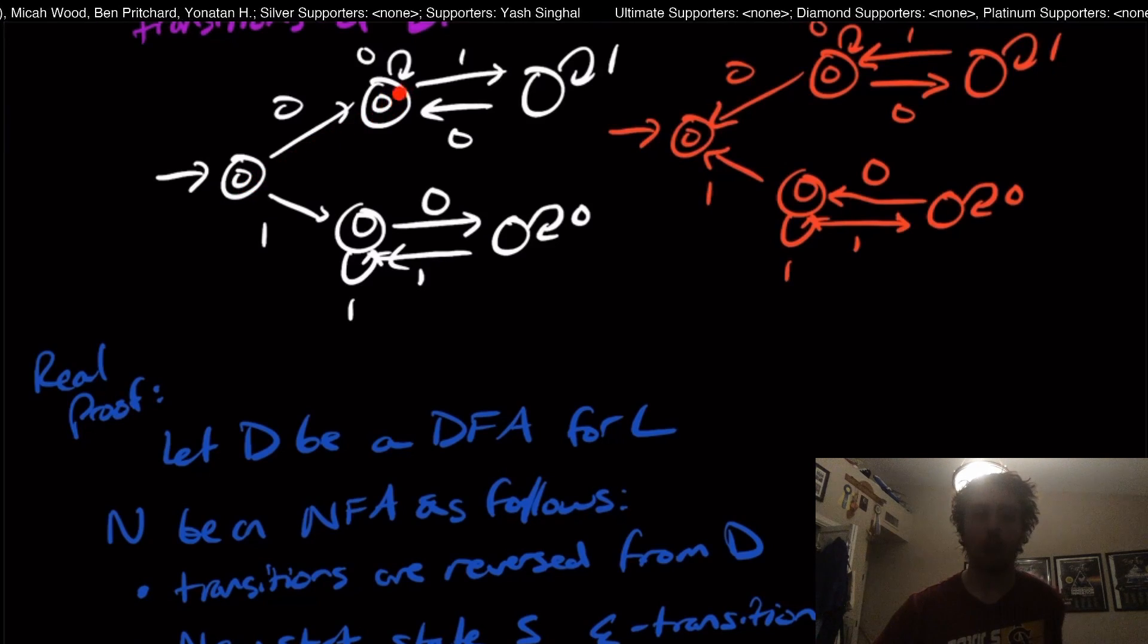Because we can start in any one of those. And what we're going to do now is we're going to make this state no longer final and these two no longer final. And now this state, the previous start state is now the only final state. So normally I would get rid of it because it was a final state before. But since it was the start state, it's the only final state now.